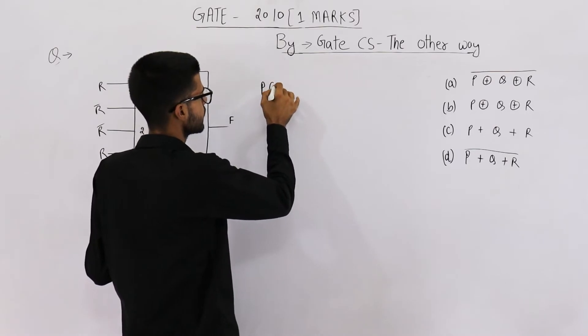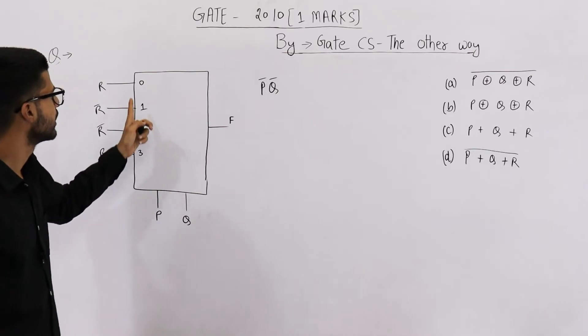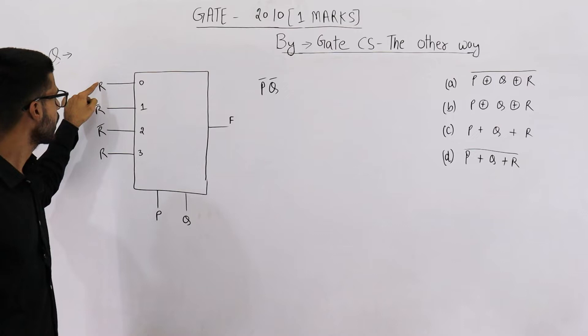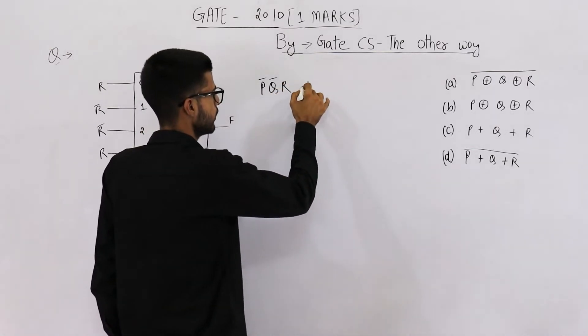Whenever both the select lines are zero zero, that means p bar q bar, in this case multiplexer will automatically select this as the output. So r is going to be the output, so I'm writing r here plus.